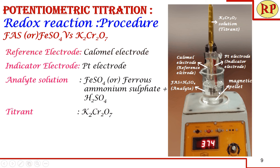Before adding any titrant, we note down the EMF value — here, 374 millivolts. As the titration progresses, we add incremental volumes of potassium dichromate, such as 1 ml each time, or 0.5 ml. The addition can also be non-uniform — 1 ml, 0.5 ml, 0.2 ml, 2.5 ml, etc. This does not matter greatly because we determine the equivalence point using a graph.